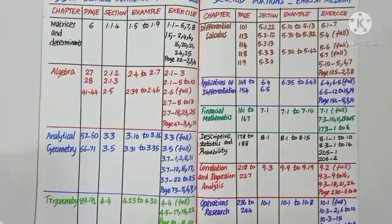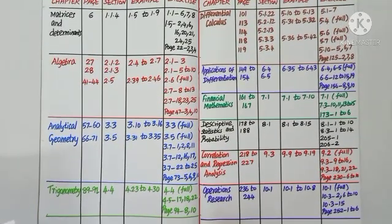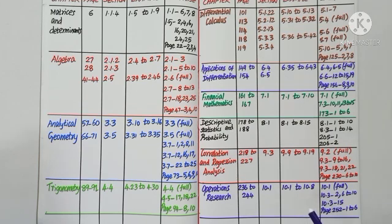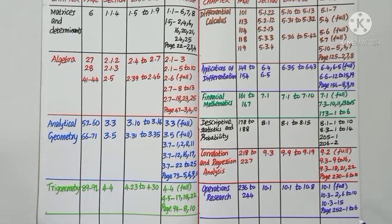Chapter 10: Operations Research. Page number 236 to 244 — Linear Programming Problem section 10.1 is deleted. Examples 10.1 to 10.8 are deleted. Exercise 10.1 is fully deleted. From exercise 10.3 objective type questions, question numbers 2, 6 to 10, and 15 are deleted. From miscellaneous exercises under Chapter 10, page number 252, question numbers 1 to 6 are deleted. Business mathematics and statistics is an easy and interesting subject, but some portions which are a little more challenging are deleted.